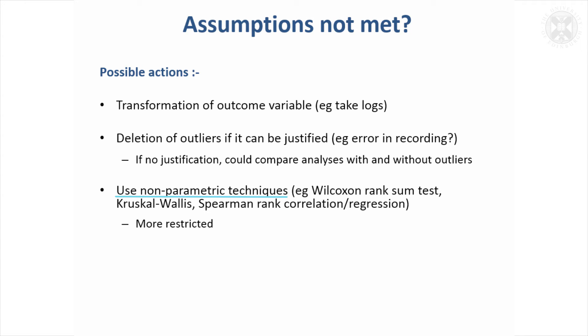If you can't transform data to be normal or justify getting rid of outliers, you might have to resort to non-parametric techniques. We looked at some last time: Wilcoxon rank-sum tests for comparing two groups of non-normal data, Kruskal-Wallis as the equivalent of ANOVA for non-normal data, and Spearman rank correlation coefficient or regression for two continuous measurements where at least one is non-normal. That's more restrictive—we can't allow for structure and fit several effects for non-normal data as we can in general linear models.